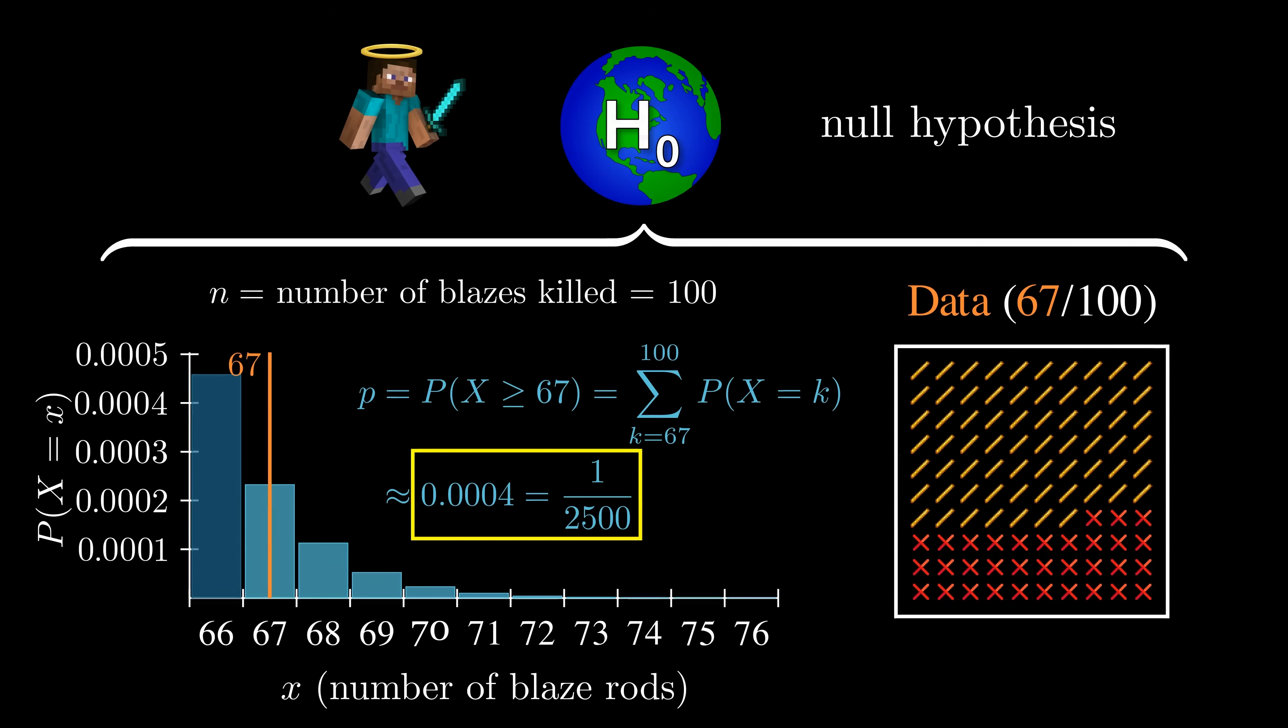Remember what this p-value means. It's the probability that if our friend didn't cheat, they would get at least 67 blaze rods. To put it another way, our friend would need to be in the top 0.04% of luckiest outcomes to get this result without cheating.